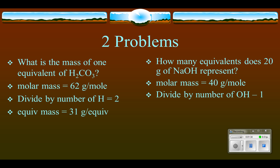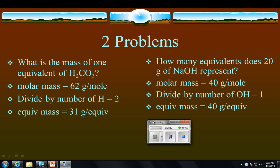We then count the number of hydroxides. The number of hydroxides is one. That's not negative one—that should have been an equal sign on there. So the number of hydroxides is one. So we divide 40 grams per mole by one, and we find that, therefore, it's 40 grams per equivalent.